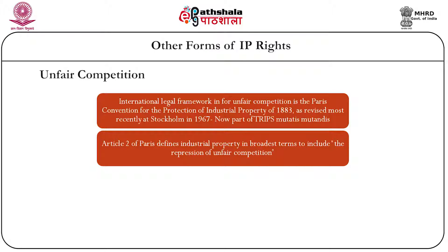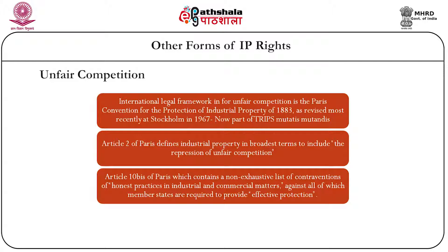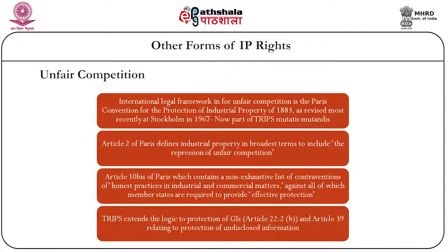Article 2 of the Paris Convention defines industrial property in the broadest terms possible and includes the repression of unfair competition. However, what constitutes unfair competition is not properly defined. Article 10bis contains a non-exhaustive list of contraventions of honest practices in industrial and commercial matters, against which member states must provide effective protection. TRIPS extends this logic to GIs under Article 22.2(b) and to protection of undisclosed information under Article 39. Despite this, there is no clear consensus among WTO member jurisdictions on what exactly constitutes unfair competition.